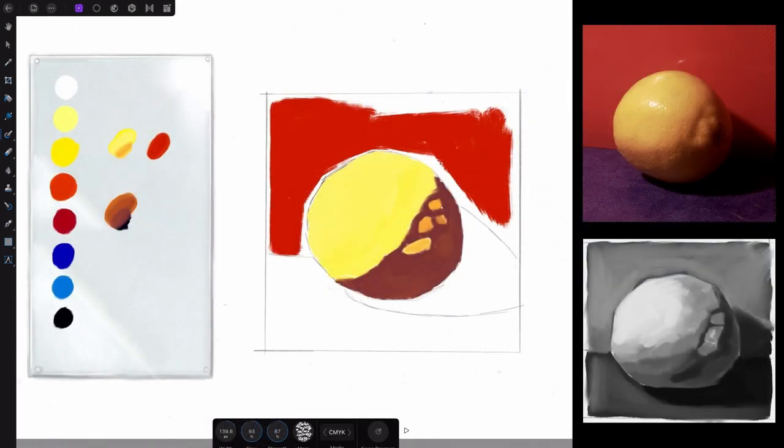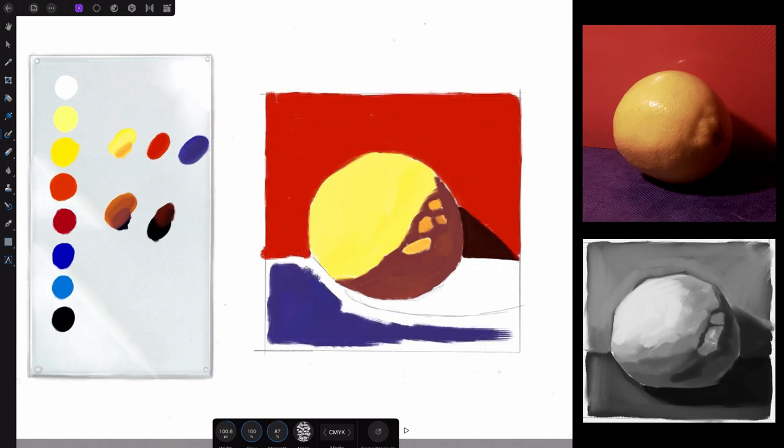This is followed up by lesson three with hue, where we talk and debunk some of the myths associated with the color wheel.